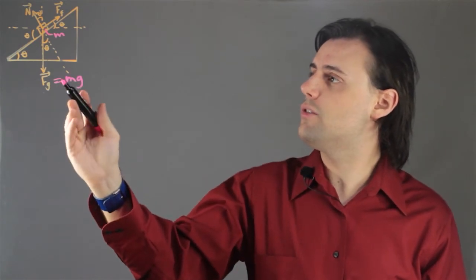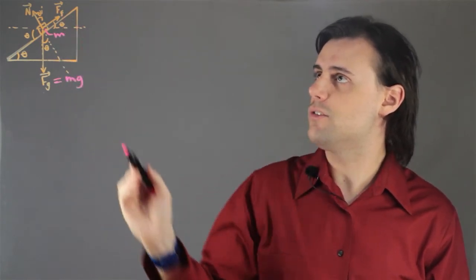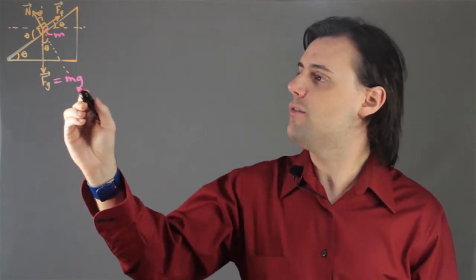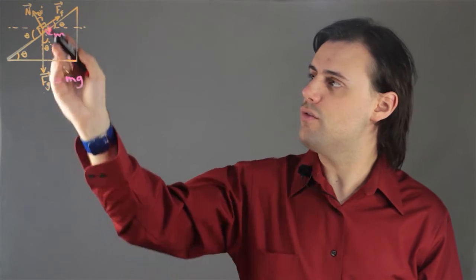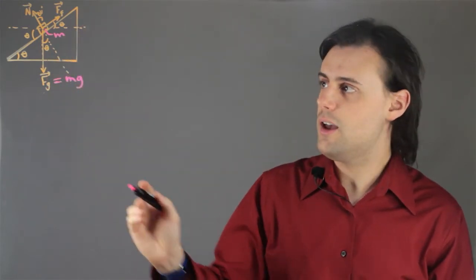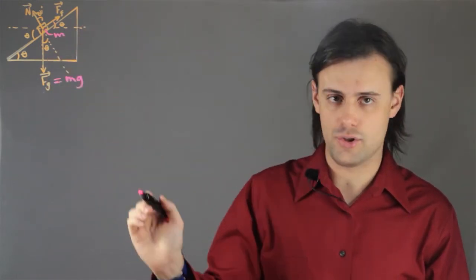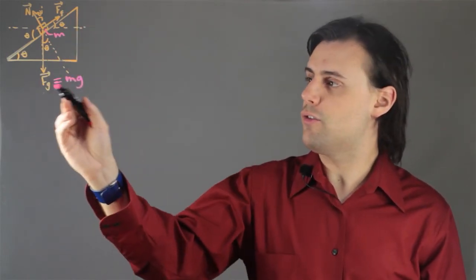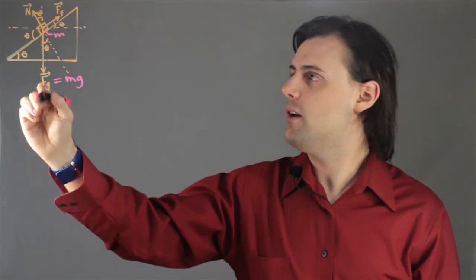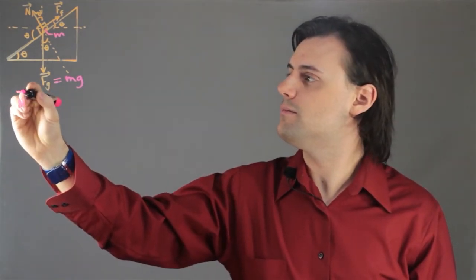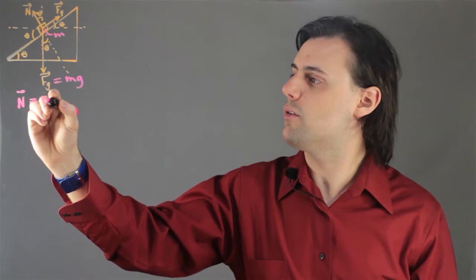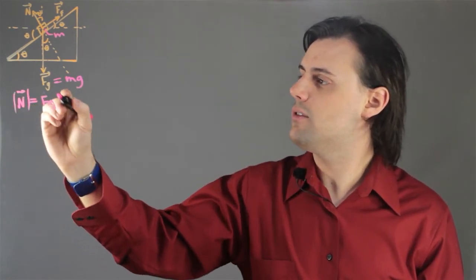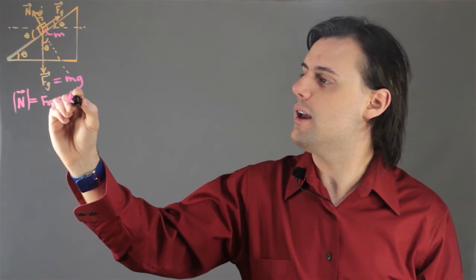So if I want to determine what this friction force is, since that's what this question is about, I have to first write down expressions for the three different forces and use a little bit of trigonometry to determine what this expression is. So I know that the force of gravity is mg. Well, the normal force is going to be equal to the gravitational force in magnitude times cosine of the angle theta.